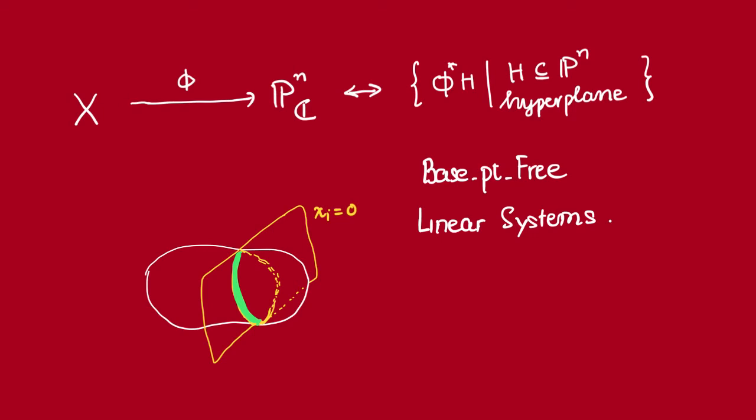For this to be a linear system, they must lie in some complete linear system D. So what is the divisor D here? It should correspond to some vector subspace of L(D). So which vector subspace is it?